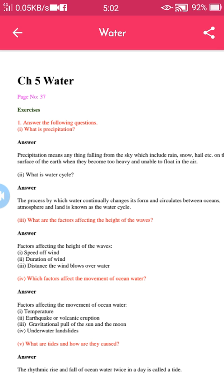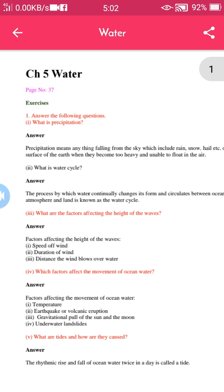Precipitation means anything that falls from the sky, which includes rain, snow, hail, etc., on the surface of the earth when they become too heavy and unable to float in the air.